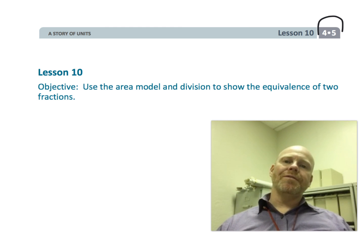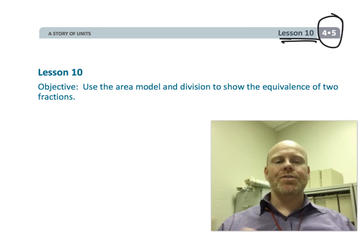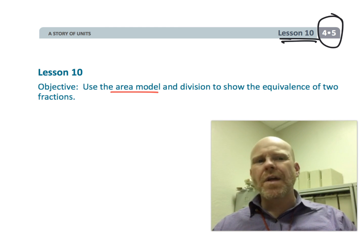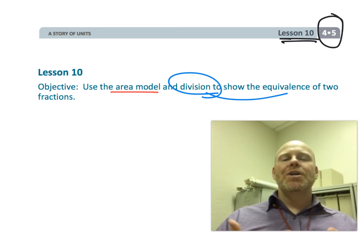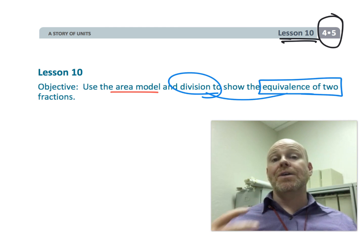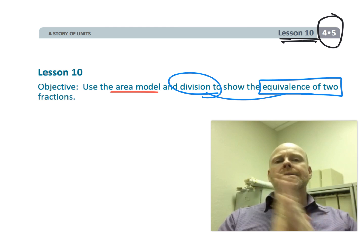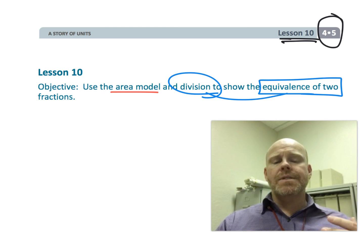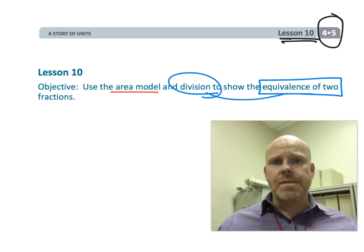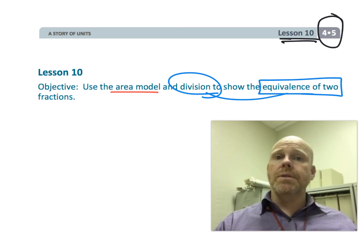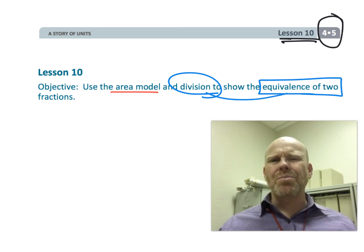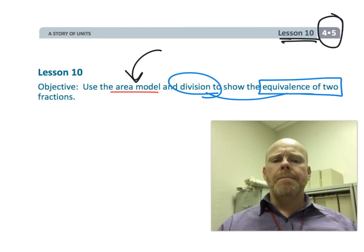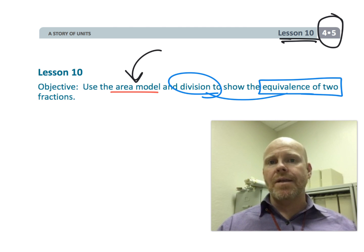This is fourth grade module 5 lesson 10. In this lesson, students are going to use the area model to prove that we can use division statements to show that two fractions are equivalent. What's different about this lesson is that previous lessons used only unit fractions — now we're going to be simplifying other fractions. It's really going to start looking like we're using the standard algorithm, but we're still using the area model just to prove things to students.